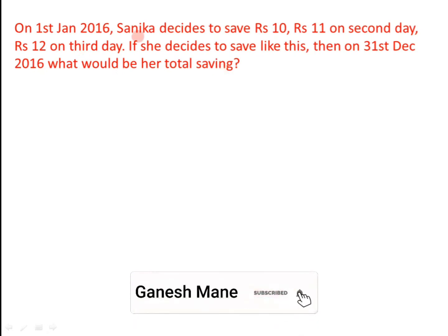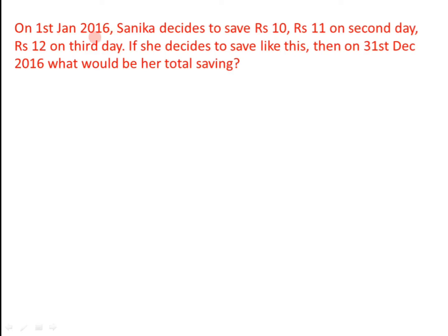In this question, Sanika starts to save Rs 10, Rs 11, Rs 12 and so on, up to 31st December 2016, and she started saving in this way from 1st January 2016. So, in a year, daily she decided to save Rs 1 more than the previous day. The question is, what would be her total savings in that year? Here we can see we have the numbers 10, 11, 12 and so on all over the year.